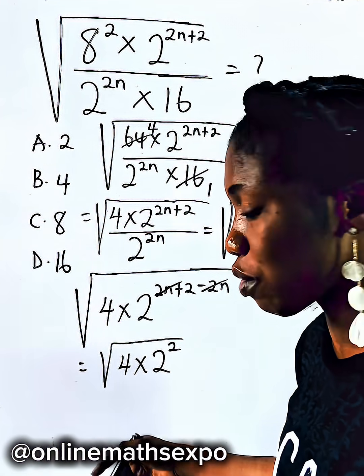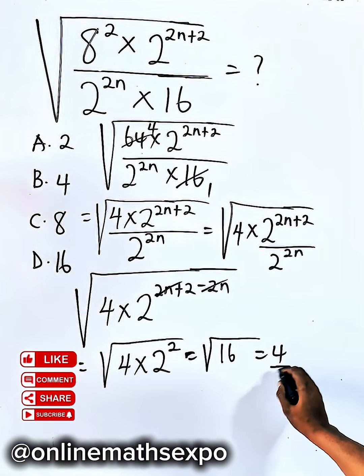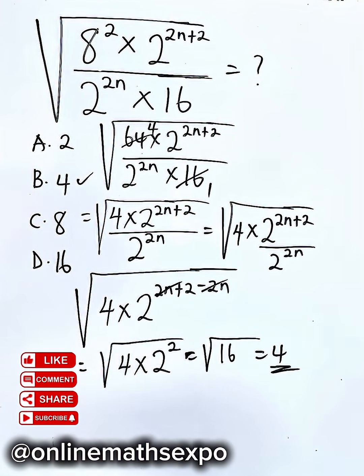2 raised to power of 2 is 2 times 2, 4 times this 4 will give us 16. And square root of 16 is 4, which is option B. Bye-bye!